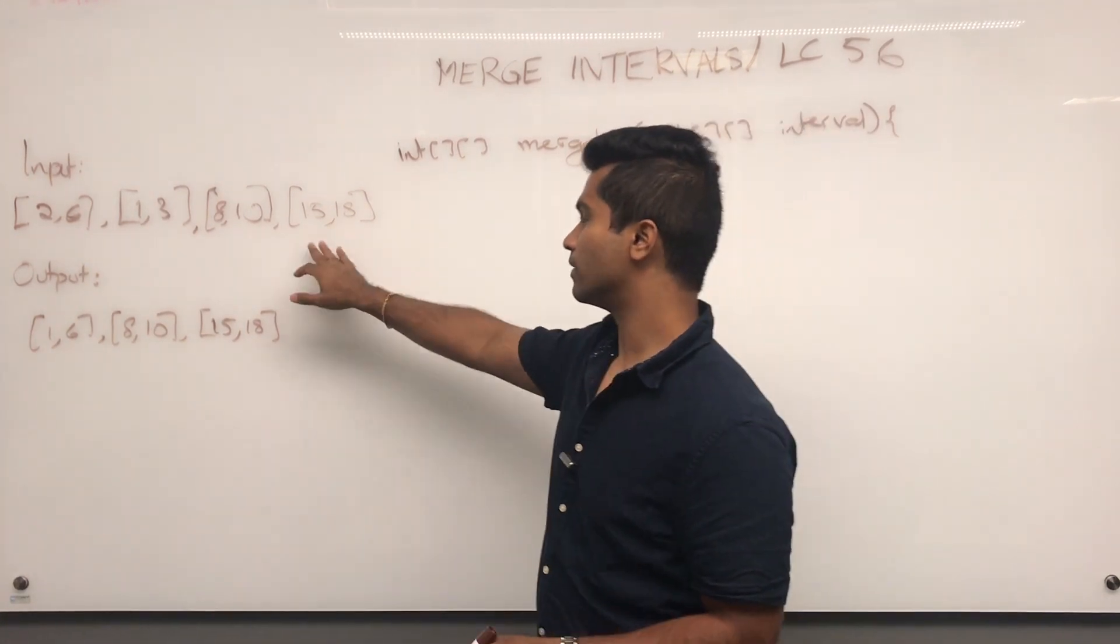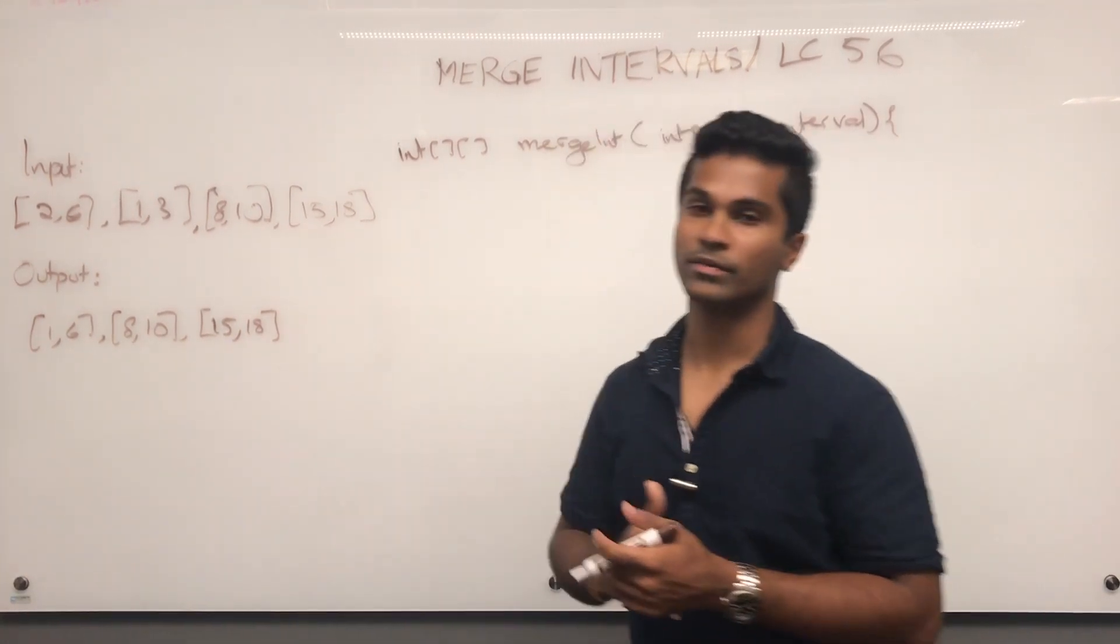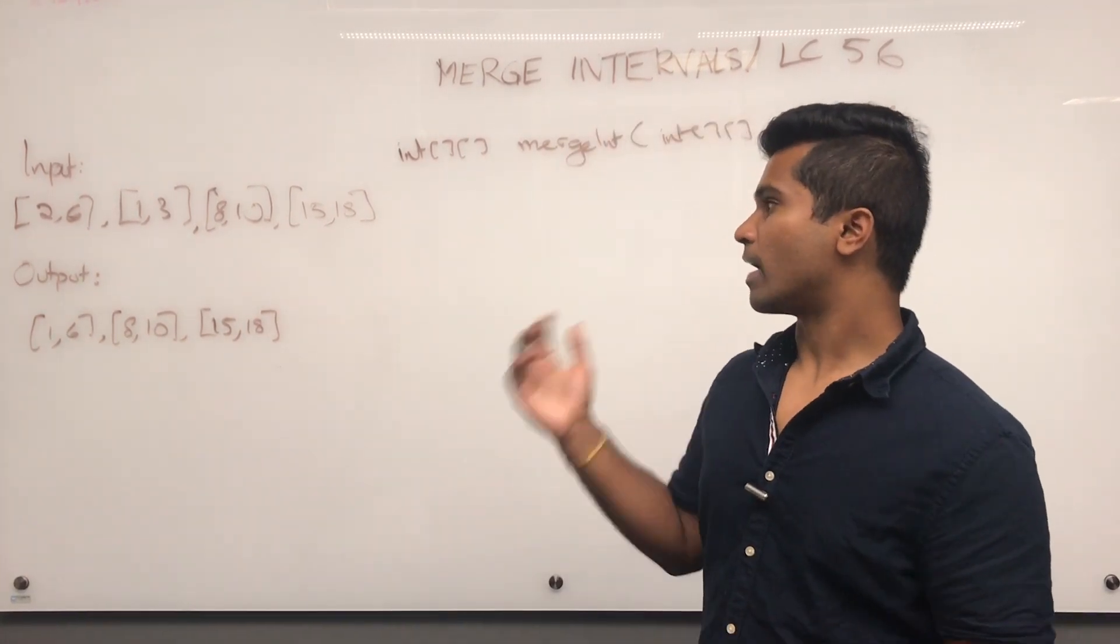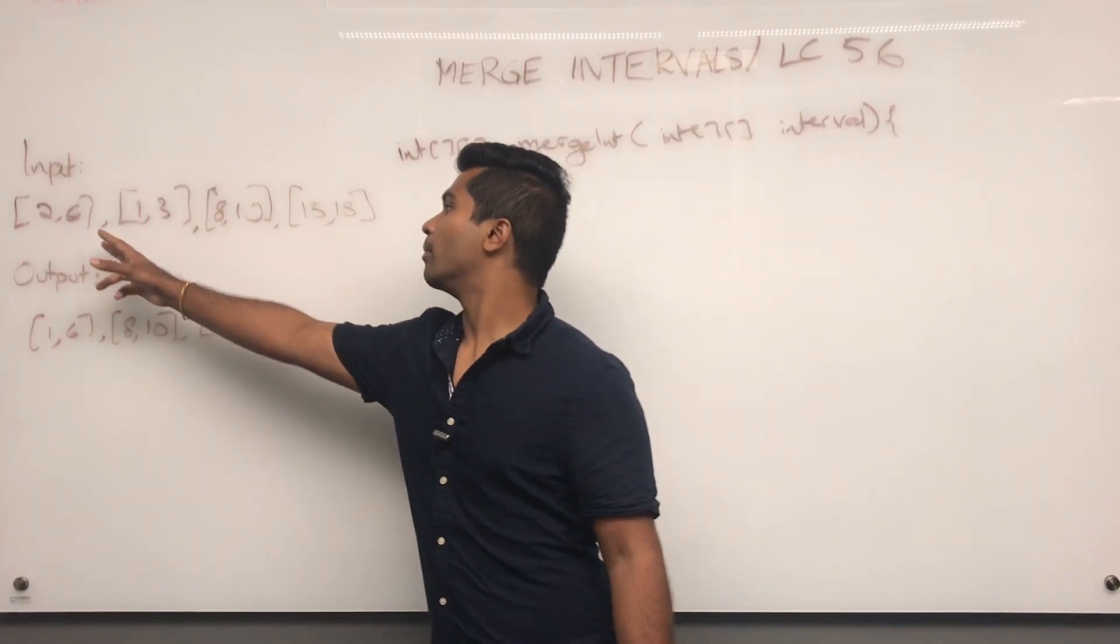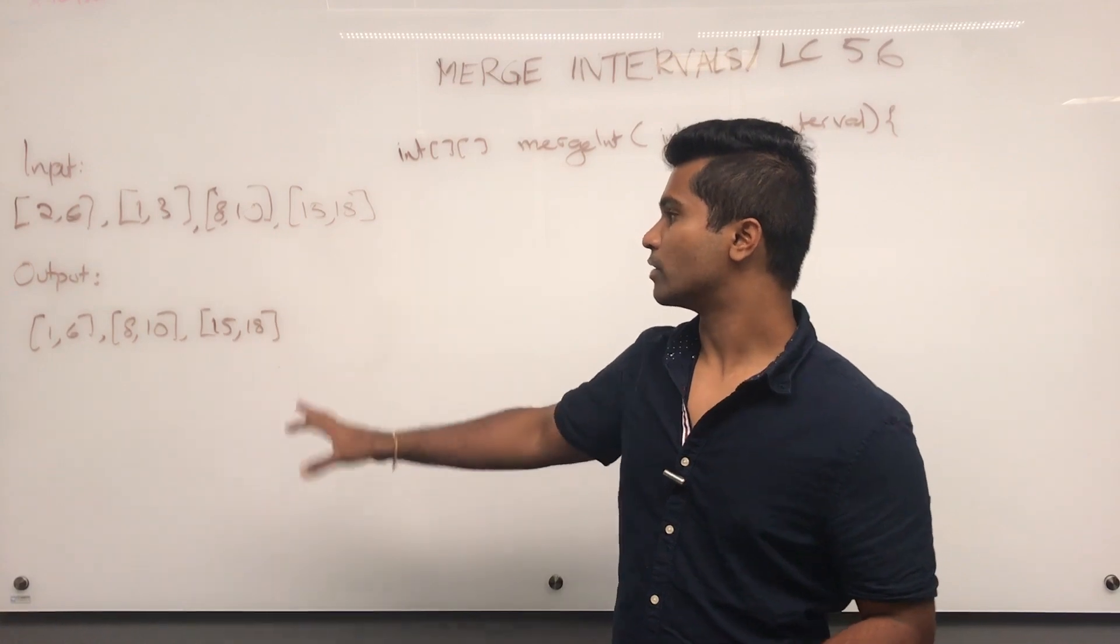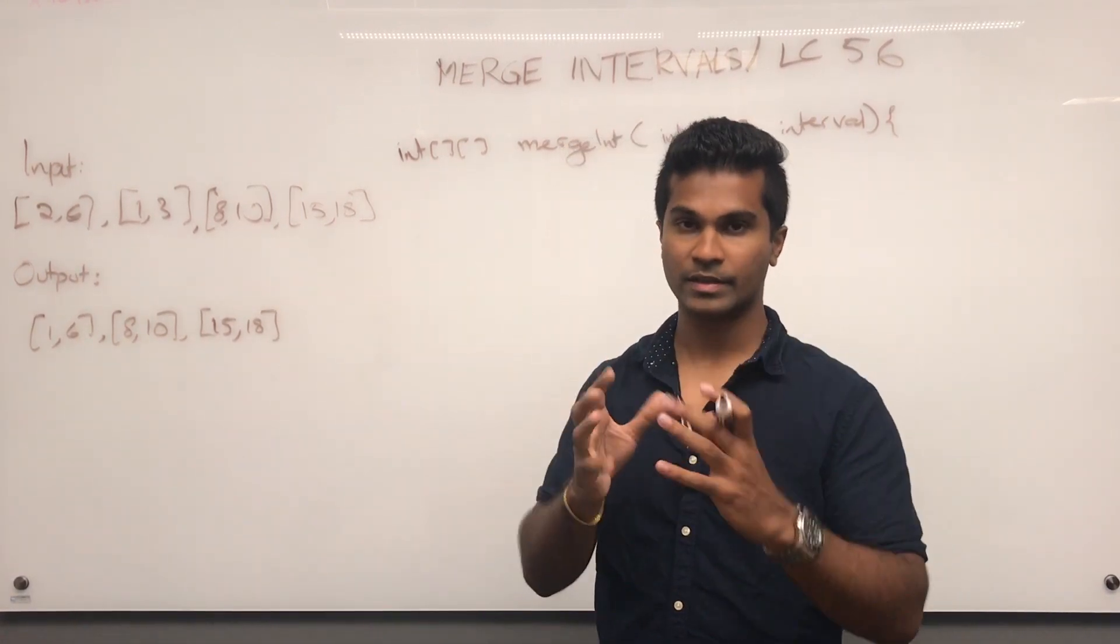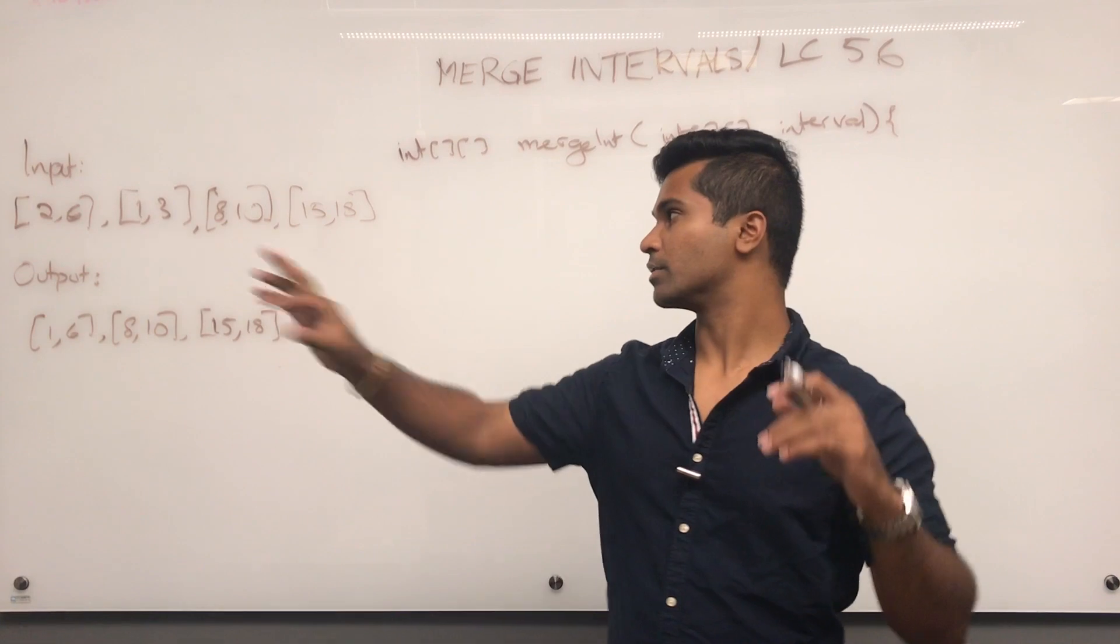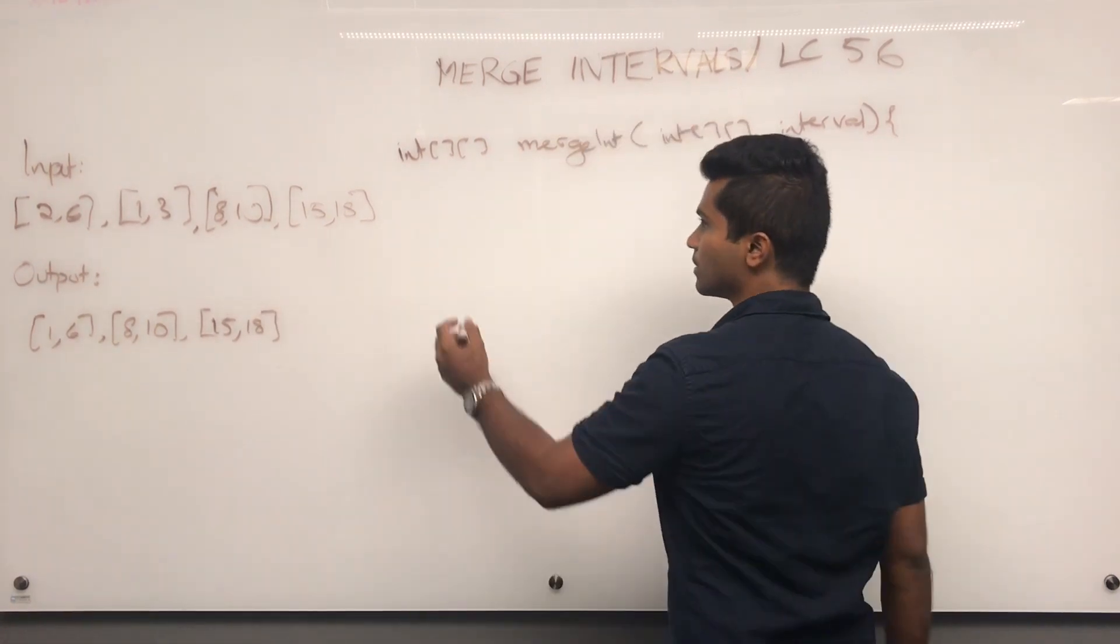The input is going to be a 2D grid of integers and the output is also a 2D grid of integers. What they're asking is if given pairs which represent intervals on the number line, we have to return pairs which are condensed based on whether there's overlapping intervals.